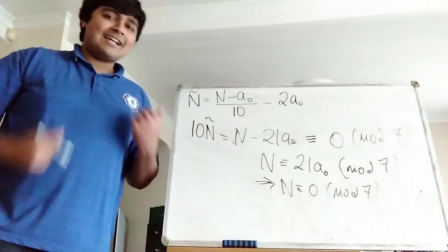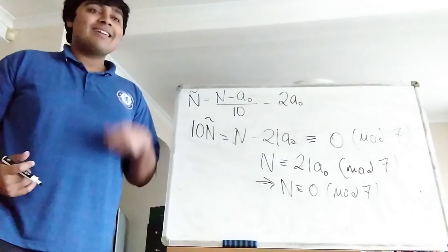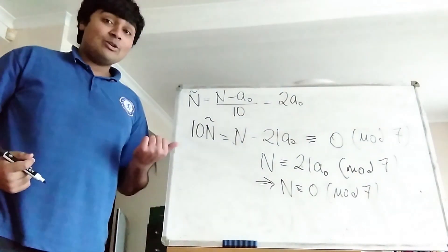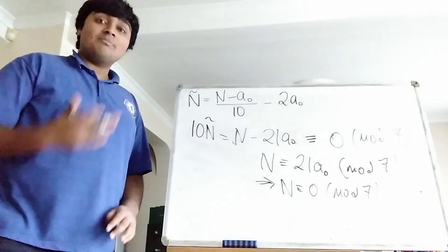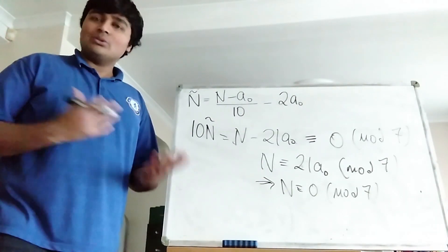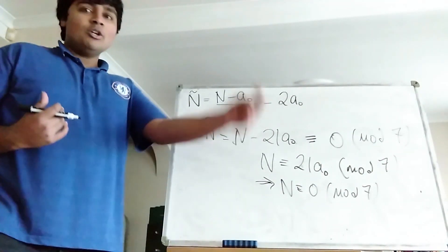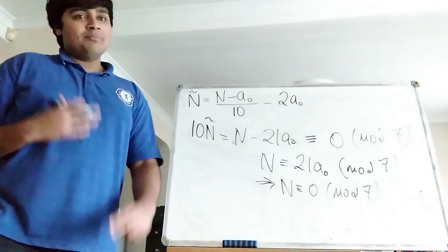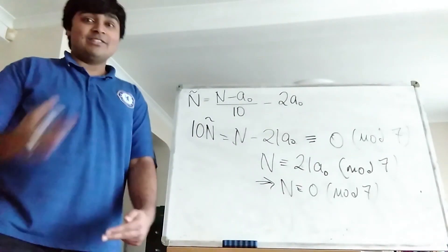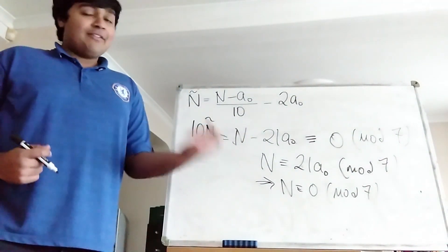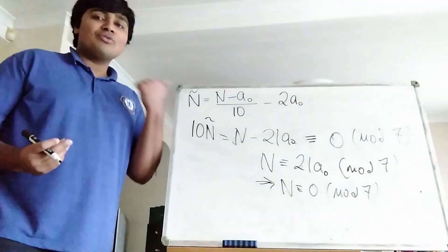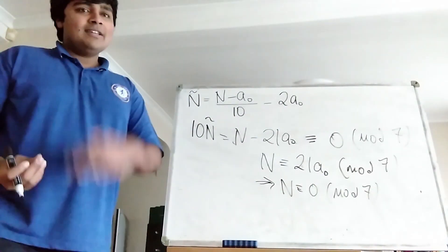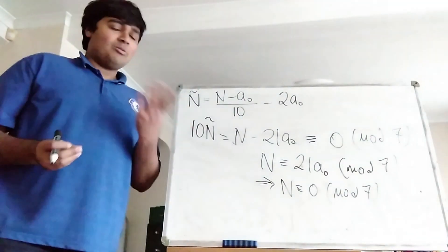So this is a cool divisibility trick and it's an if and only if. When you apply this trick, the new number is a multiple of 7 if and only if the original number was a multiple of 7. What's really cool is you reduce the number of digits by 1 each time. If you start with a 5-digit number, apply the algorithm to get a 4-digit number, then a 3-digit number, then a 2-digit number — you should be able to tell whether a 2-digit number is a multiple of 7. If that remaining number is a multiple of 7, then your original 5-digit number is too, and similarly if it isn't, none of them are.